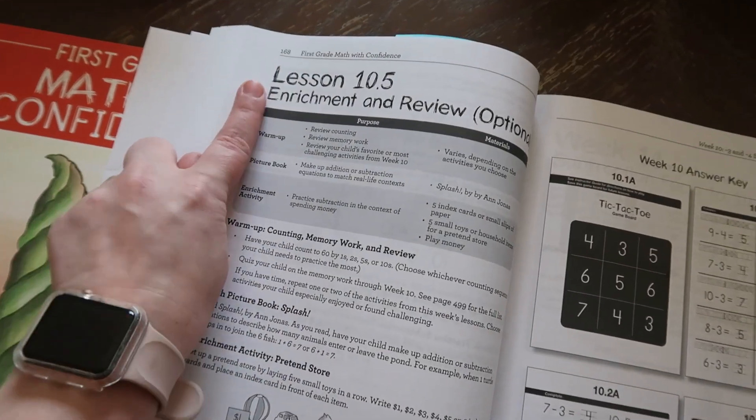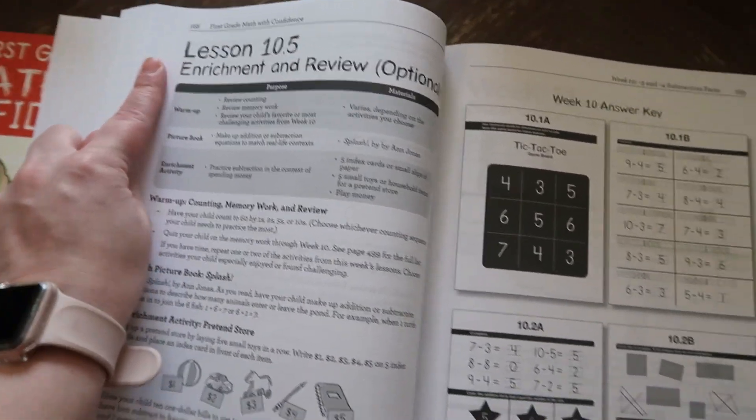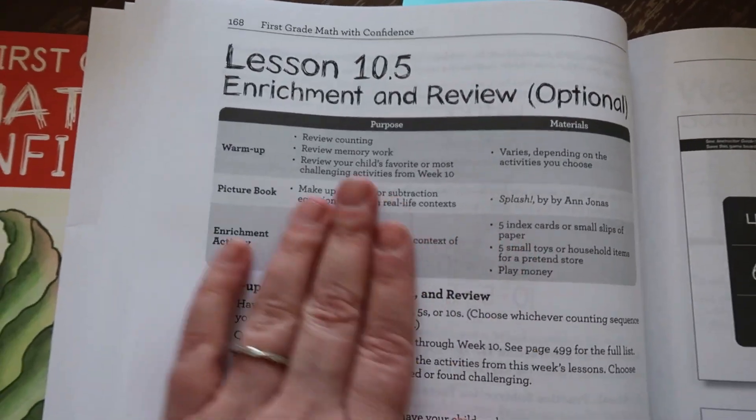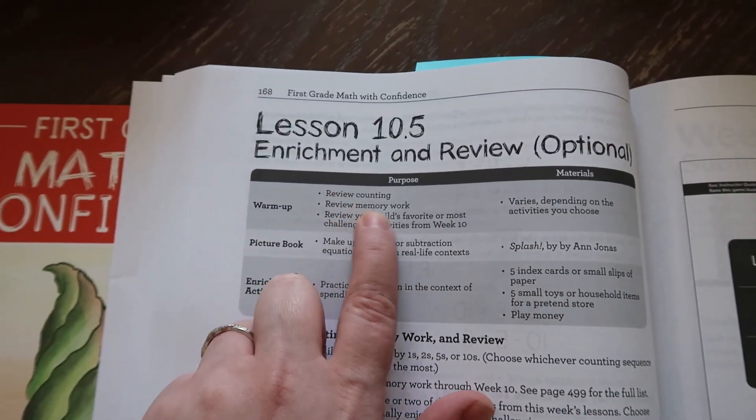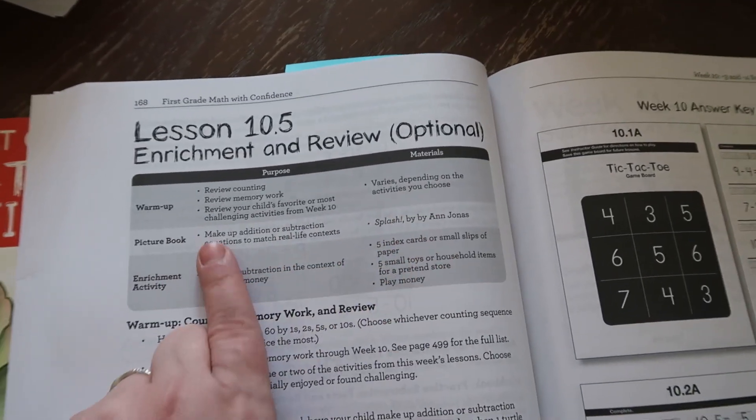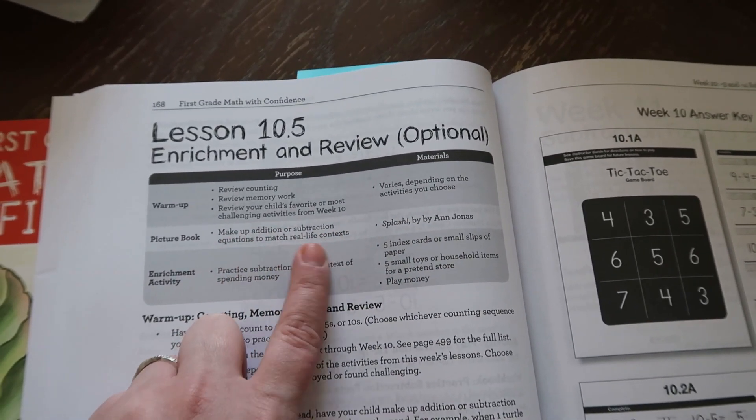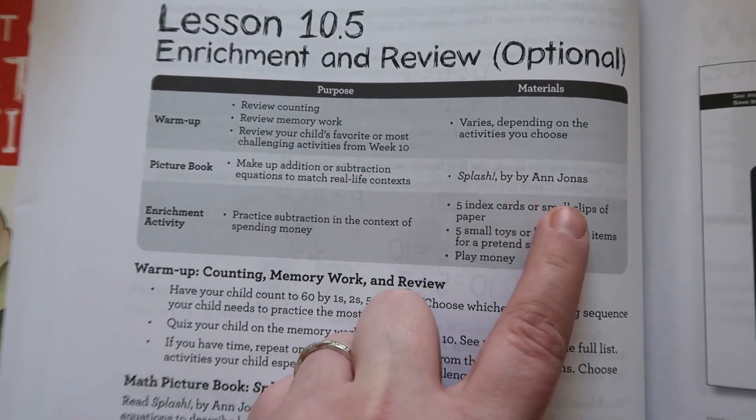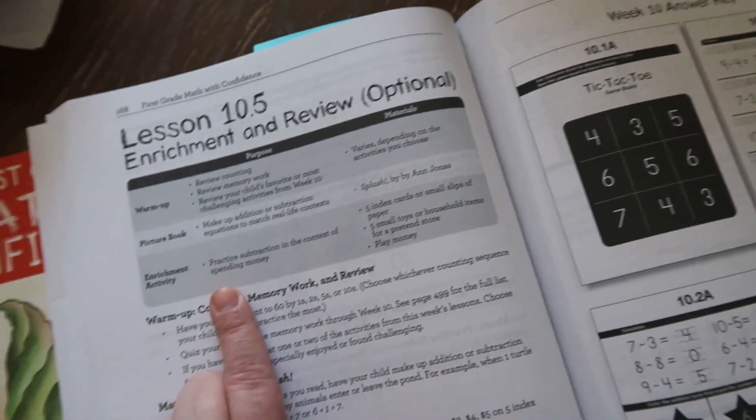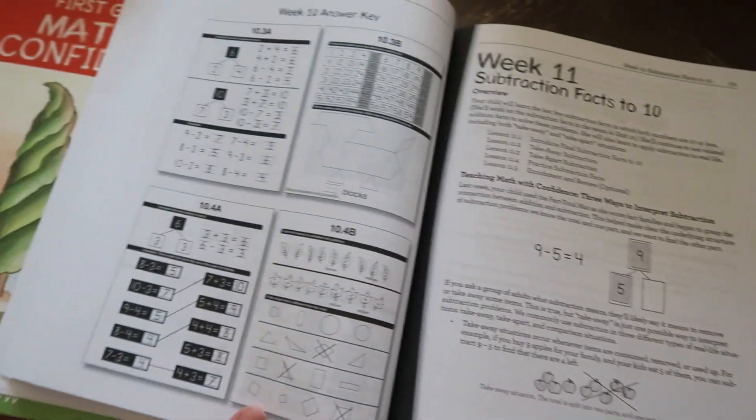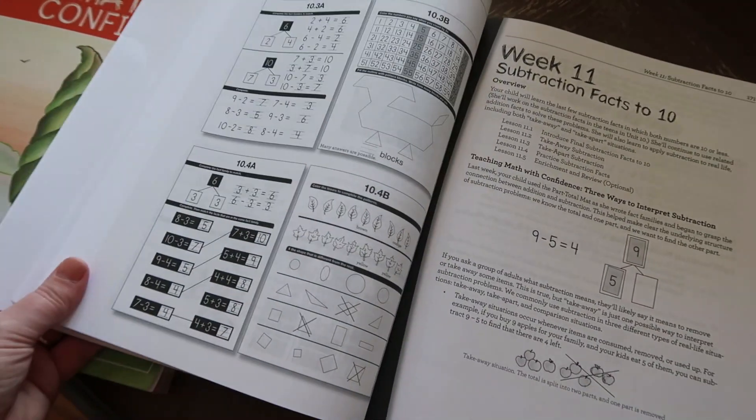And so here is the fourth or the fifth day, the enrichment and review, which is optional. We usually like to do that on our fun school Friday. So you review counting, memory work, child's favorite most challenging activities, make up addition or subtraction equations to match real life context. So you can read the picture book every Friday, Splash by Ann Jonas, and then more games that they can do. And then it has your answer key. So that is pretty much what the teacher's book looks like.